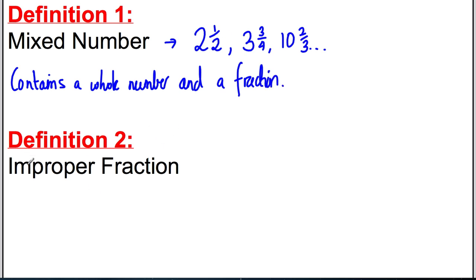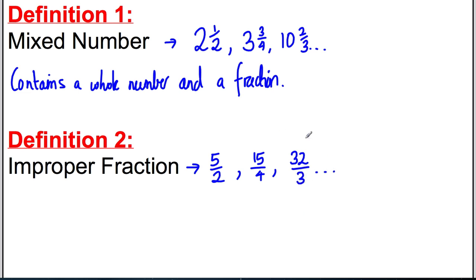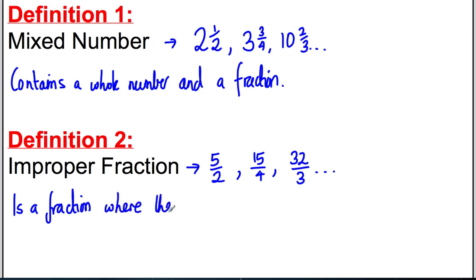Now, what's an improper fraction? Here are three examples: 5 over 2, 15 divided by 4, and 32 divided by 3. An improper fraction is a fraction where the numerator is bigger than the denominator.